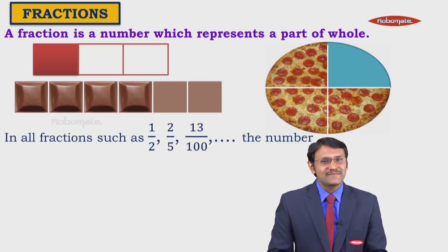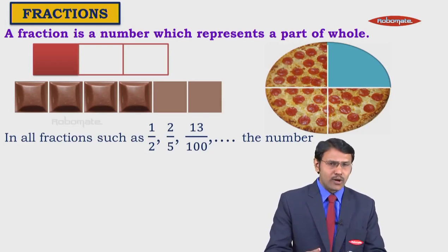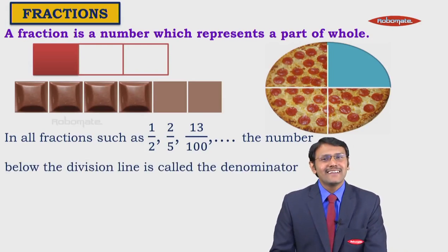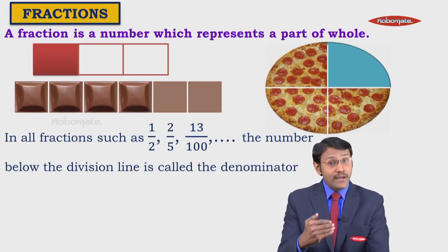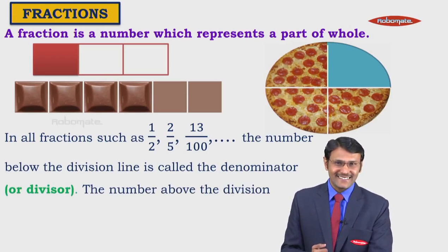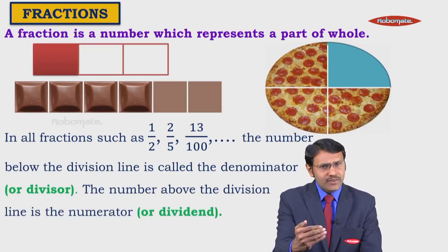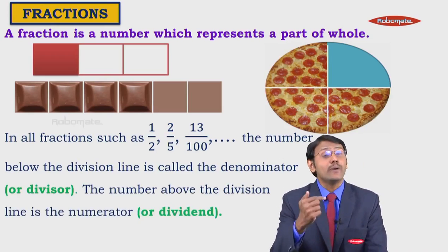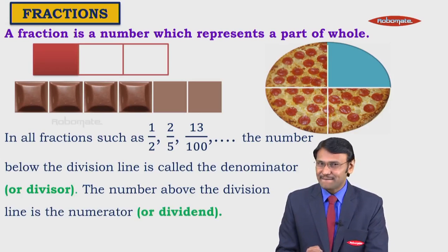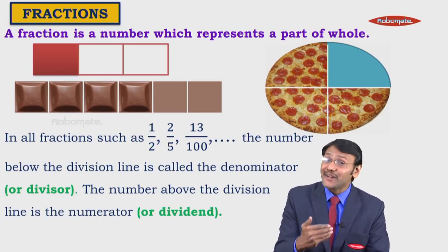So basically, as we can see, in all the fractions such as 1 upon 2, 2 upon 5, 13 upon 100 and so on, the number below the division line is called the denominator or the divisor, and the number above the division line is called the numerator or the dividend. So remember these terms: numerator and denominator.